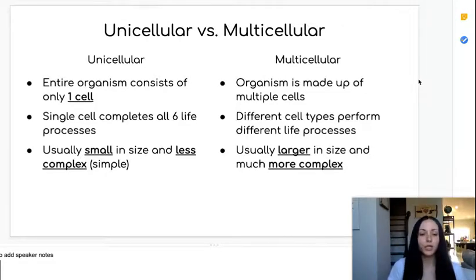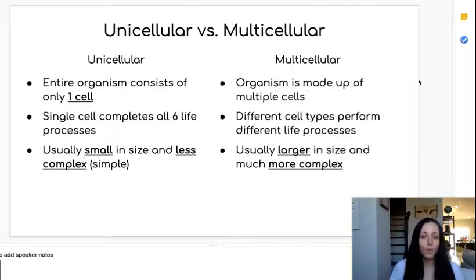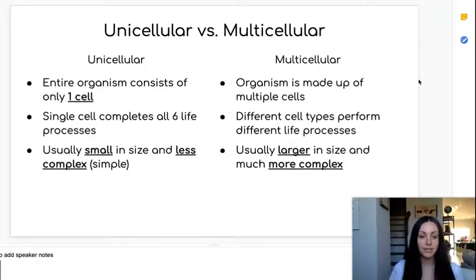A unicellular organism — uni meaning one, cellular meaning related to cells — is an organism that is made up of, or consists of, only one single cell. That means that single cell is the entire organism.